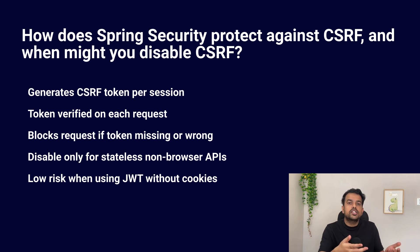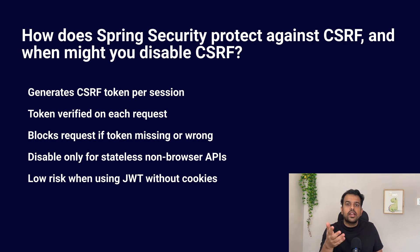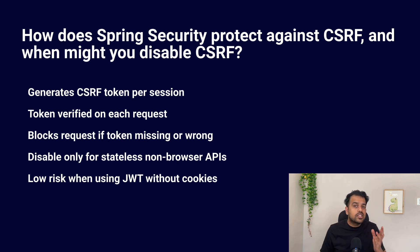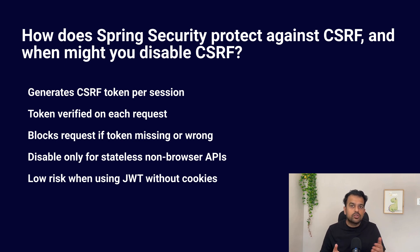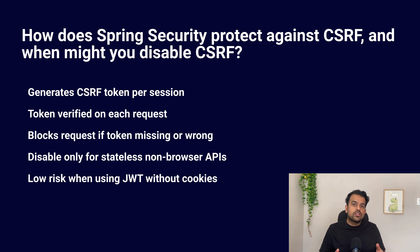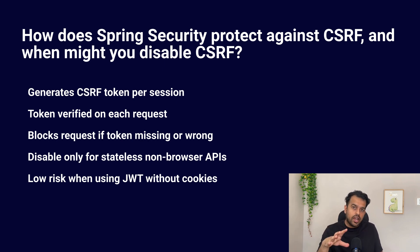When do we disable CSRF? When we build REST APIs that are not used by browsers — like mobile apps, Postman calls, backend-to-backend calls, or automated system calls. CSRF mainly attacks browsers using cookies, and if your API uses token-based authorization like JWT and does not rely on cookies, CSRF risks are very low, so managing CSRF tokens becomes unnecessary complexity. That is why we disable it — but only for stateless, non-browser APIs.